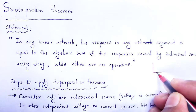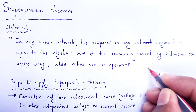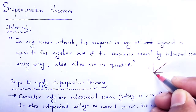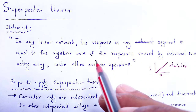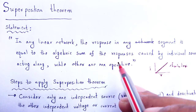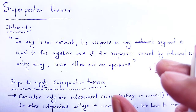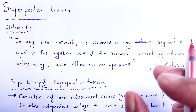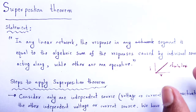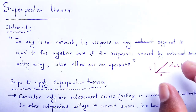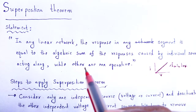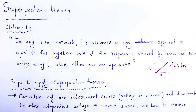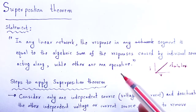If we plot the graph between voltage and current it will be linear. From Ohm's law, the graph between voltage and current looks like a straight line. So circuits which have a linear network where Ohm's law is obeyed can be solved by using the superposition theorem.